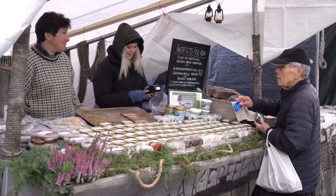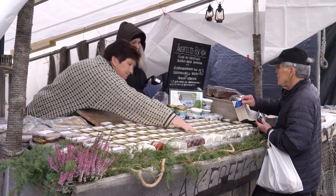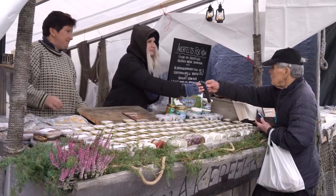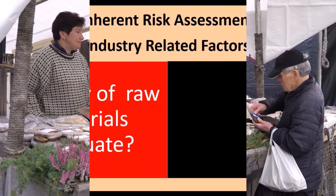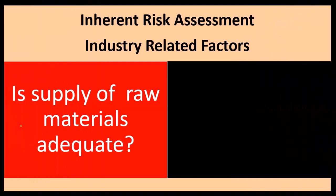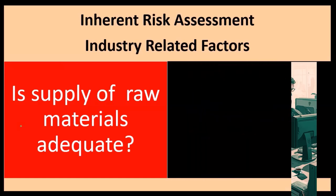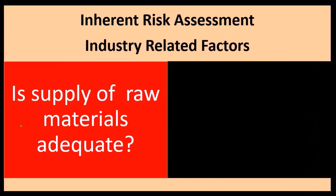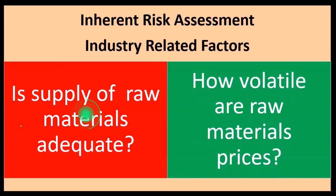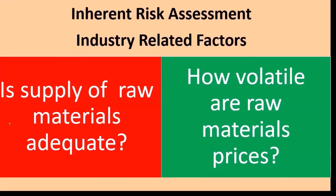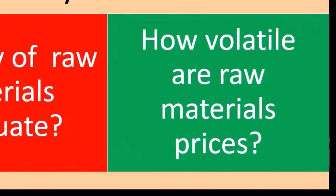If we have a lot of different vendors and one vendor goes down, we can purchase from others without much difficulty. For example, if we need to purchase a precious metal and only one company supplies it, that's more inherently risky than purchasing something common like water, where if one supplier falls through, we could easily go somewhere else. So the specialization of purchasing is a key inherent risk factor.